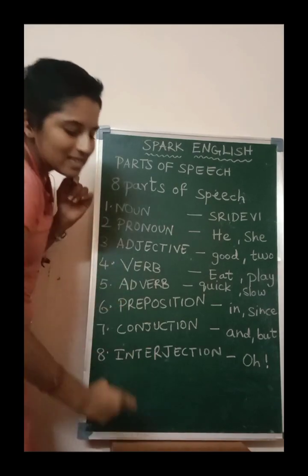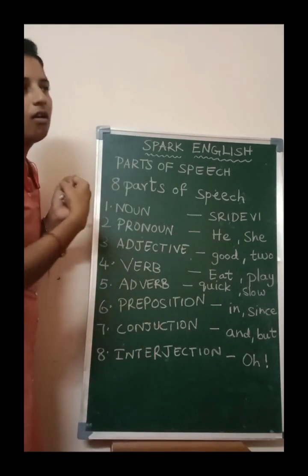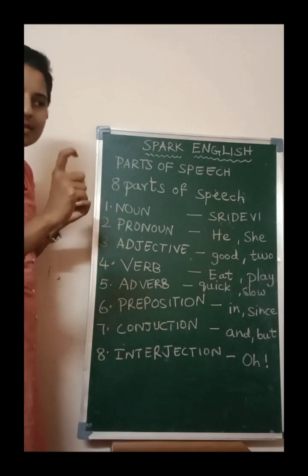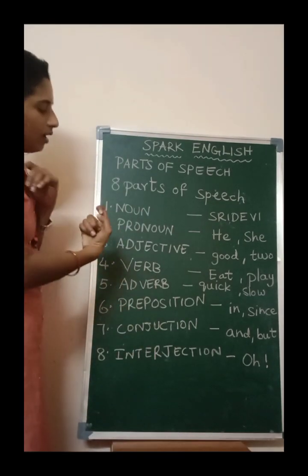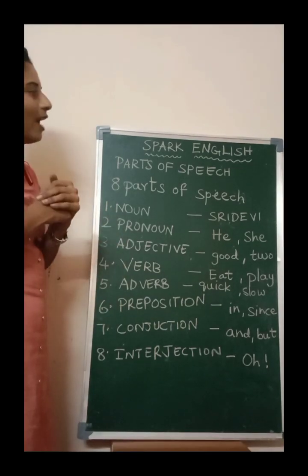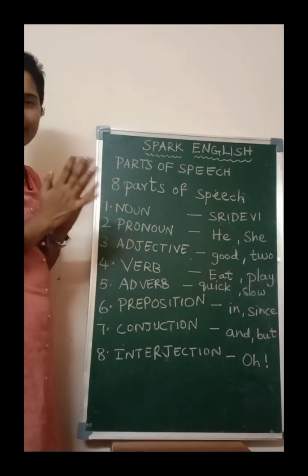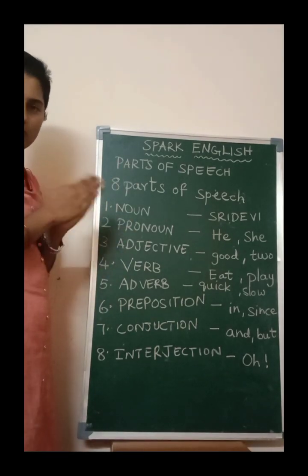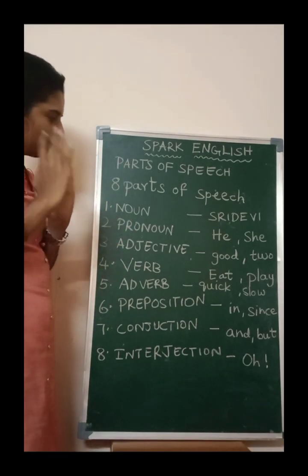And this is a table — table is a noun. This is a board — board is a noun. So anything that is a name is a noun.